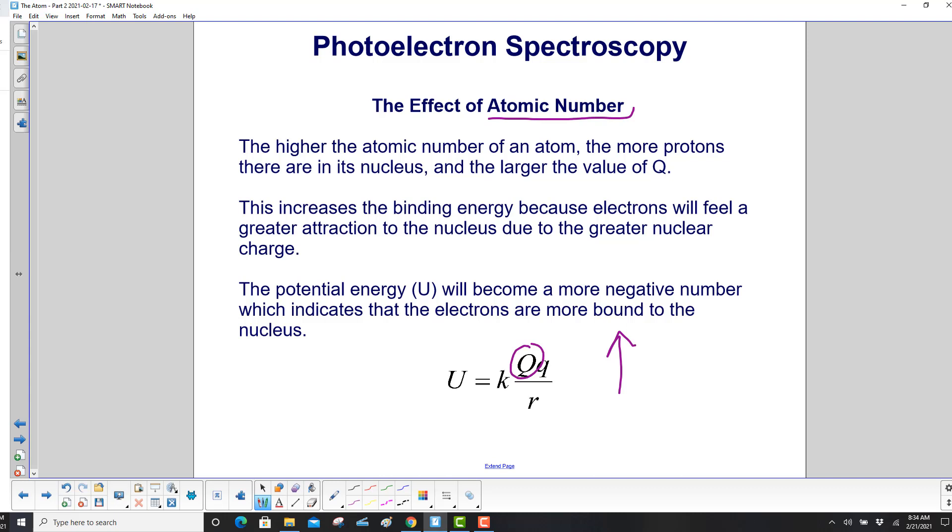The potential energy will become a more negative number, which indicates that the electrons are more bound to the nucleus.